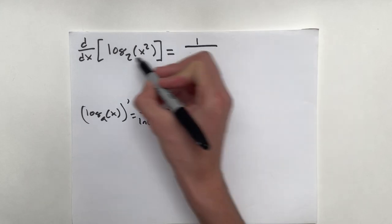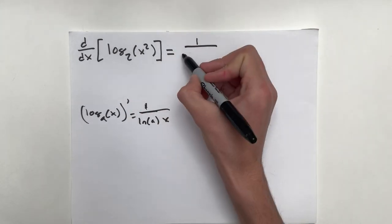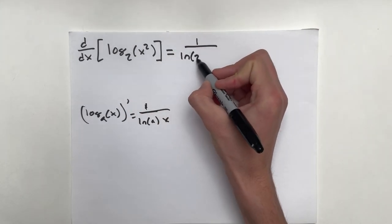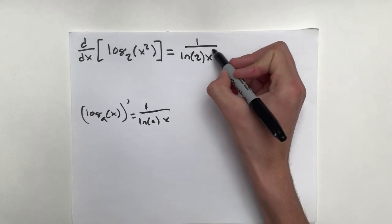1 over, our base is 2, so 1 over natural log 2, x squared.